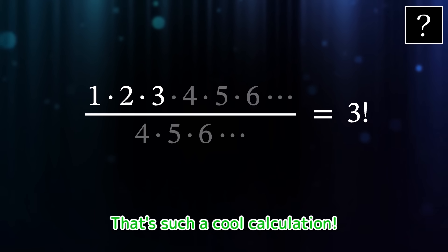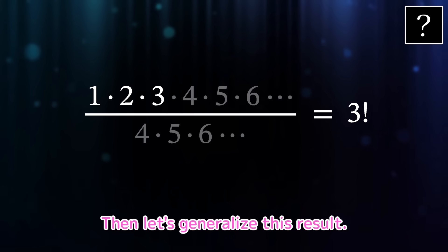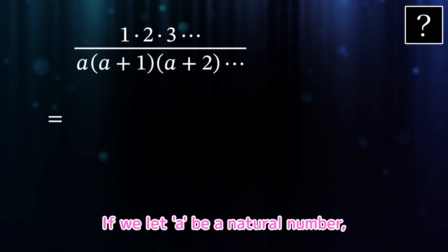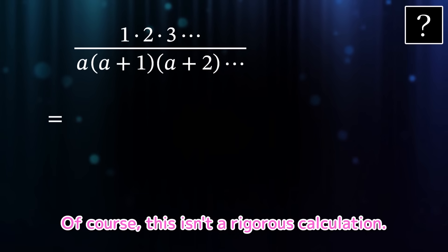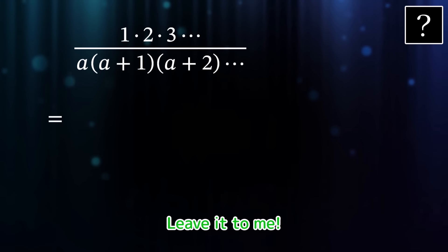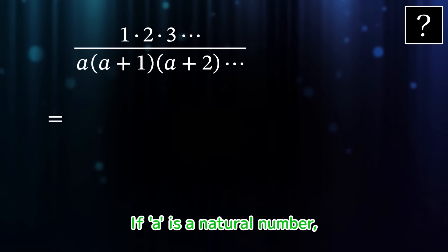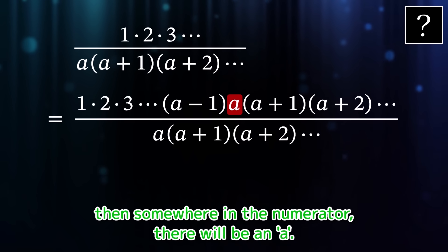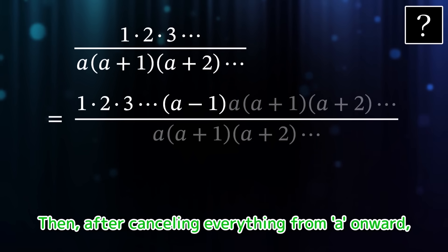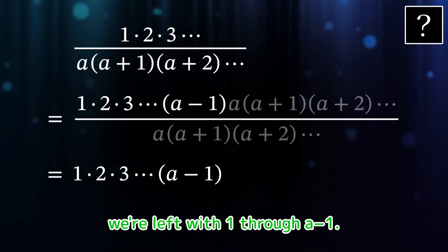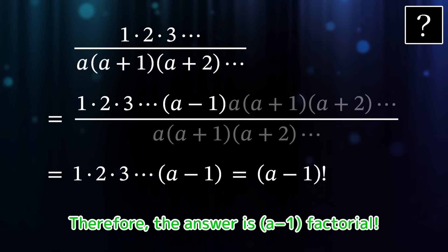That's such a cool calculation. Let's generalize this result. If we let a be a natural number, what value would this expression take? Of course this isn't a rigorous calculation. If a is a natural number, then somewhere in the numerator there will be an a. After cancelling everything from a onward, we're left with 1 through a minus 1. Therefore, the answer is (a-1) factorial.